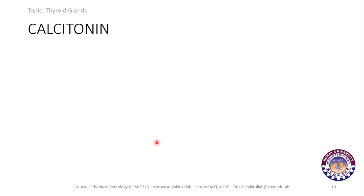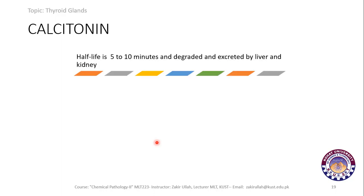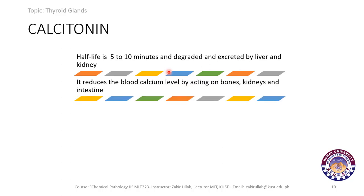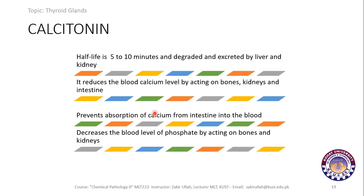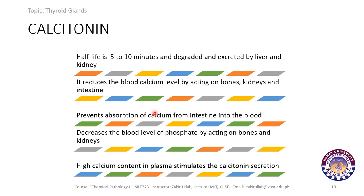Calcitonin is another hormone released by the thyroid gland, with a half-life of 5 to 10 minutes. It is degraded and excreted by the liver and kidneys. Calcitonin reduces blood calcium levels by acting on bones, kidneys, and the intestine — it prevents absorption of calcium from the intestine. Calcitonin also decreases blood phosphate levels by acting on bones and kidneys. High calcium content in plasma stimulates calcitonin secretion.